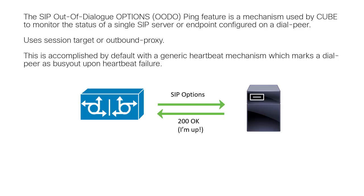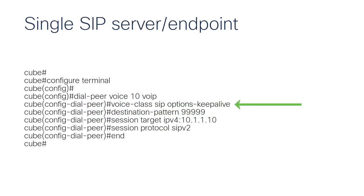It uses a session target or outbound proxy. This is accomplished by default with a generic heartbeat mechanism which marks a dialpeer as busy upon heartbeat failure. To enable SIP options towards a single SIP server using session target or outbound proxy, it's possible to use only the default voice class on the intended dialpeer, which enables default values for monitoring.